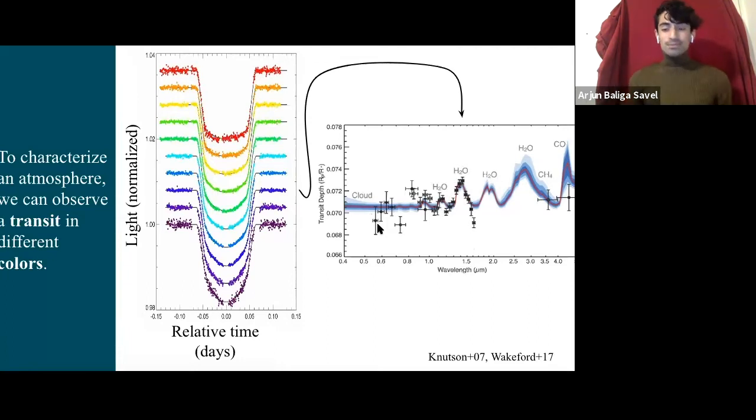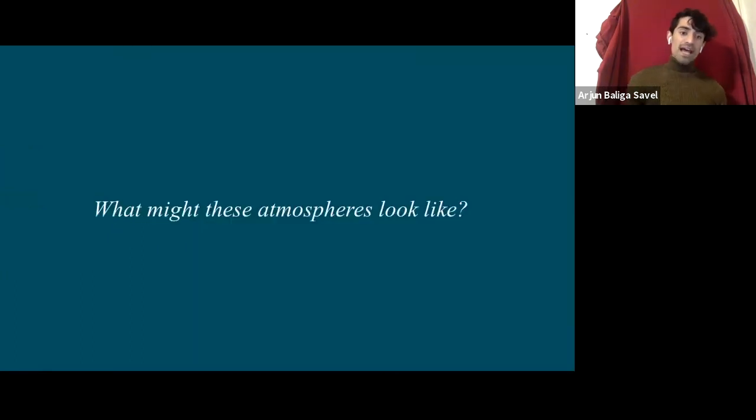So ideally, we can take this information of how deep was this transit at which color, and be able to, from that, answer the question of what's inside this exoplanet atmosphere? Now, I'll say that this is an idealized case, because as we'll find out, it's not quite as simple a picture as I'm painting right now. So we have a sense of how to find exoplanets and how to determine what's in their atmospheres.